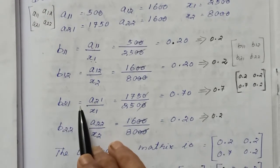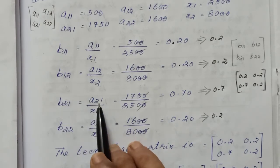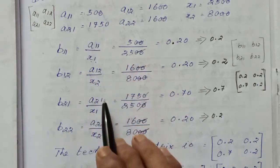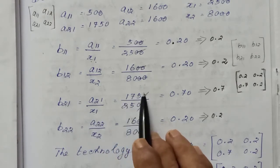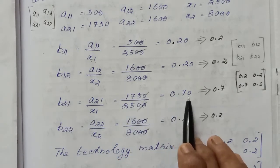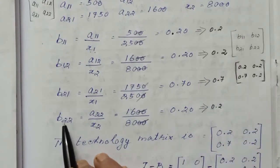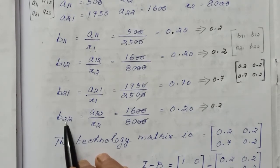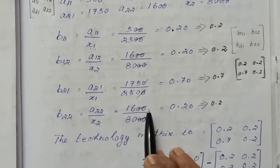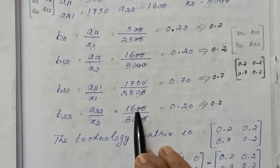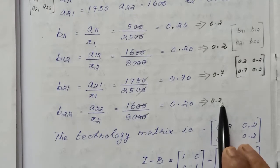Next, A21 divided by x1: 1,500 divided by 2,500 gives 0.70. Then b22, which is the second row, second column: A22 divided by x2 equals 1,600 by 8,000. Cancel out zeros: 16 by 80 equals 0.20.